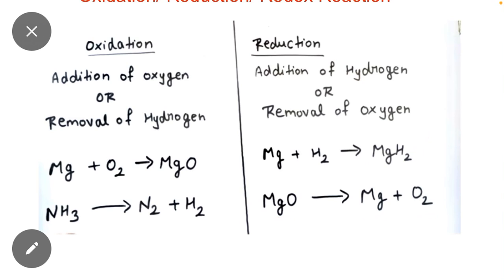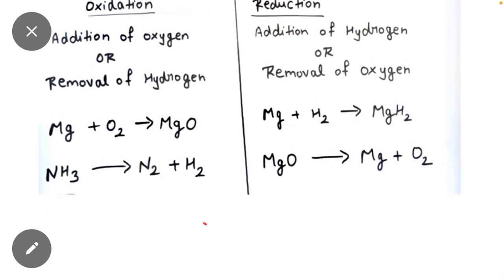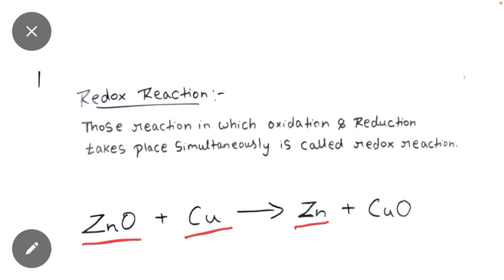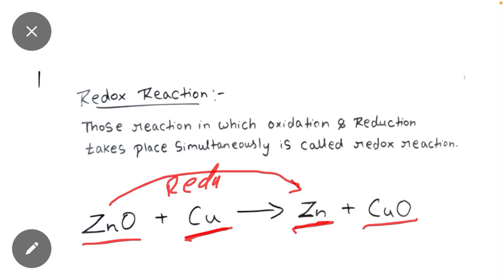The next topic is redox reaction. A redox reaction is one in which oxidation and reduction take place simultaneously — at the same time. For example, zinc oxide reacts with copper to give zinc and copper oxide. Here, zinc oxide loses oxygen to form zinc — that is reduction. Copper gains oxygen to form copper oxide — that is oxidation. Since both occur at the same time, this is a redox reaction.